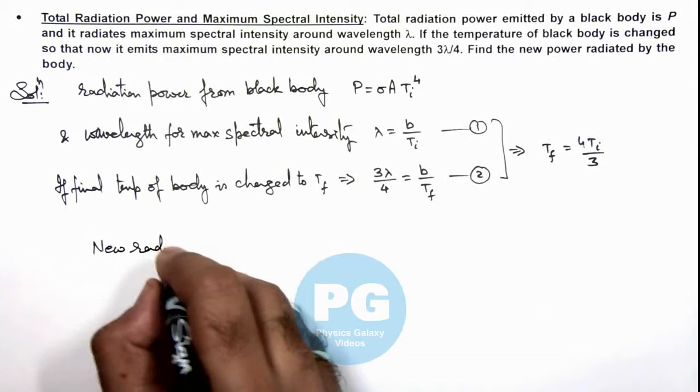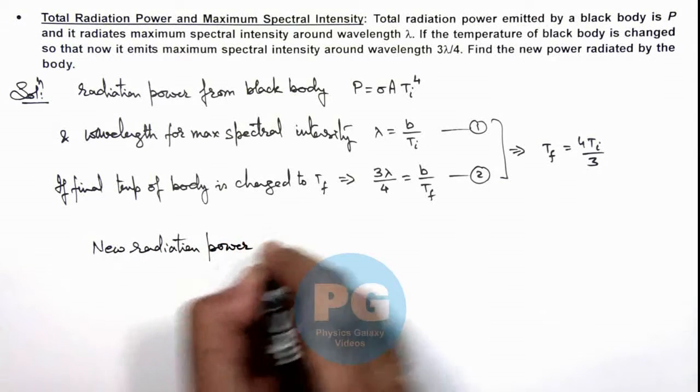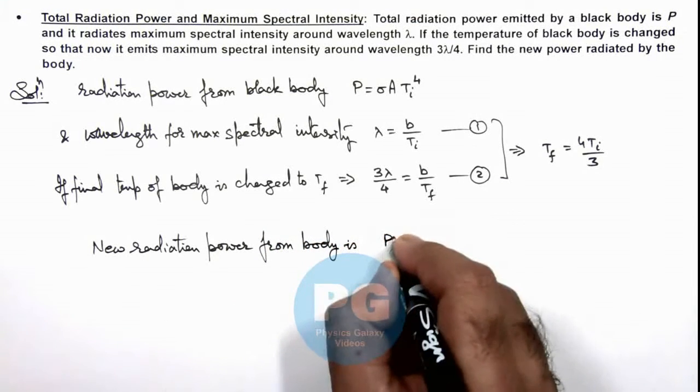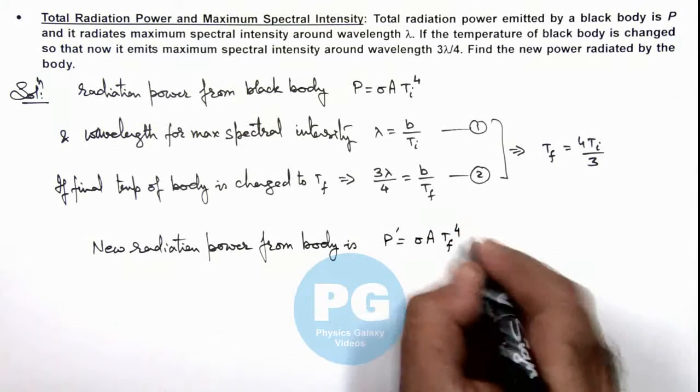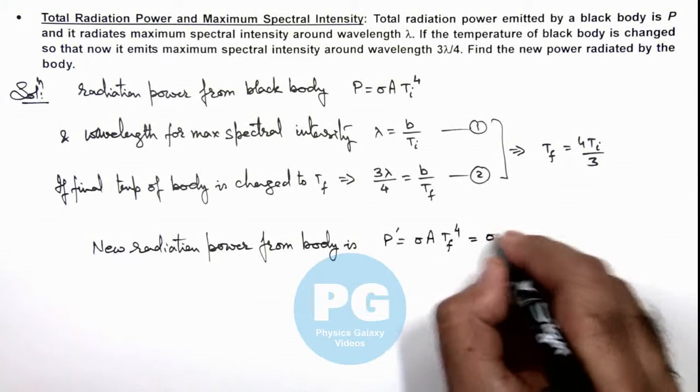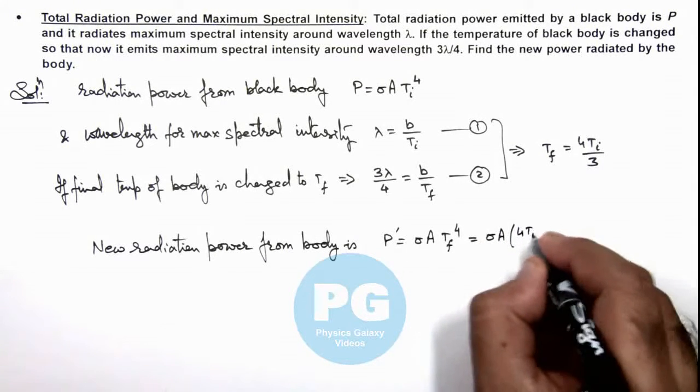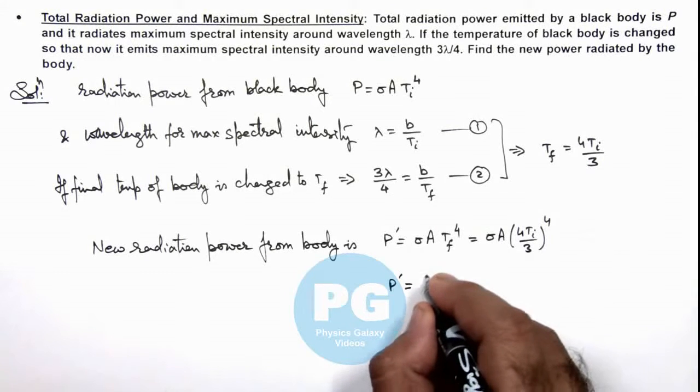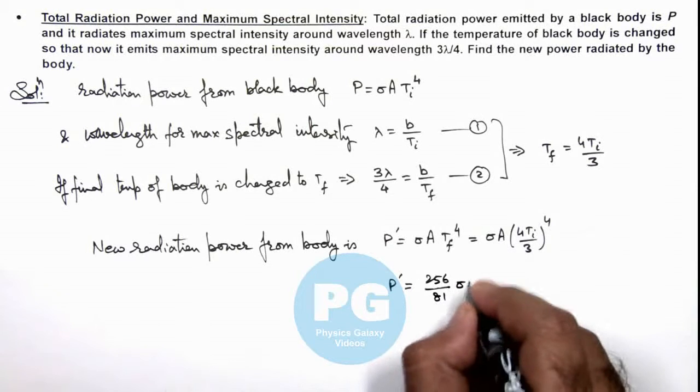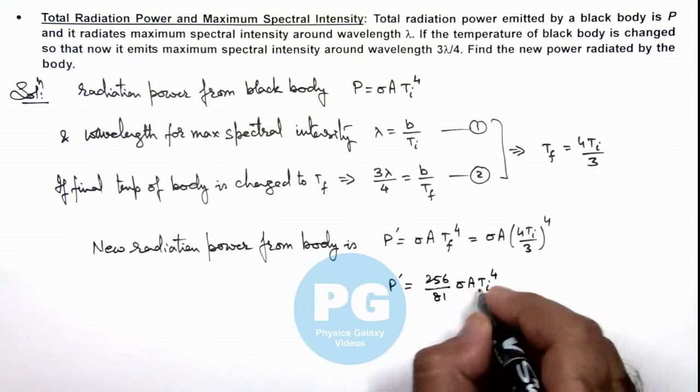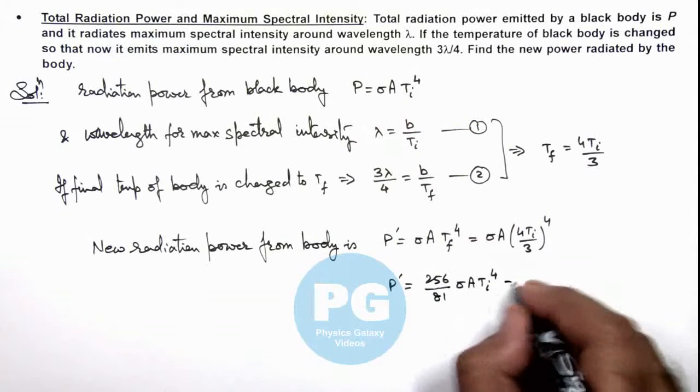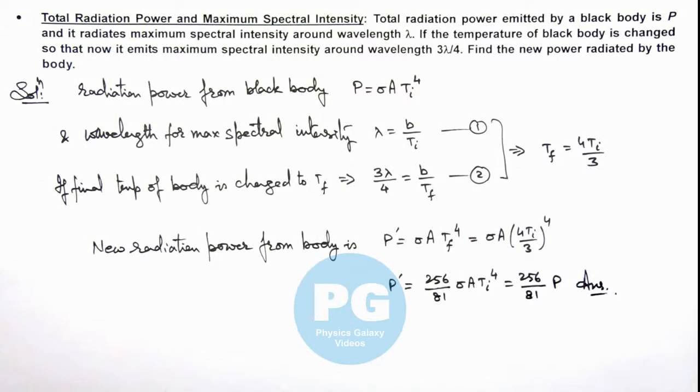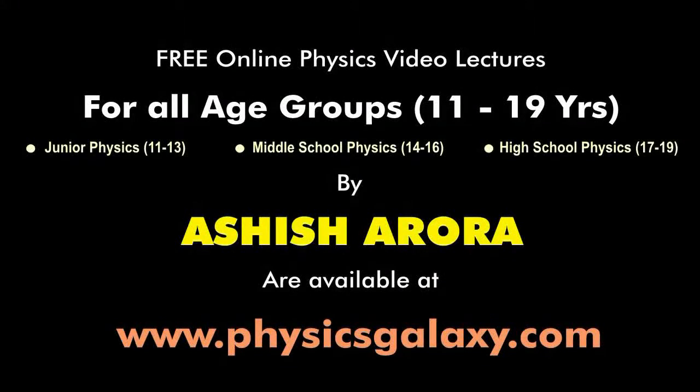Now we can write the new radiation power from the body. The new radiation power P' = σA(T_f)^4. If we substitute the value, this is σA(4T_i/3)^4. On simplifying, we get P' = (256/81)σAT_i^4. Since σAT_i^4 is given as P, we get P' = (256/81)P. This is the result of this problem. Thank you.